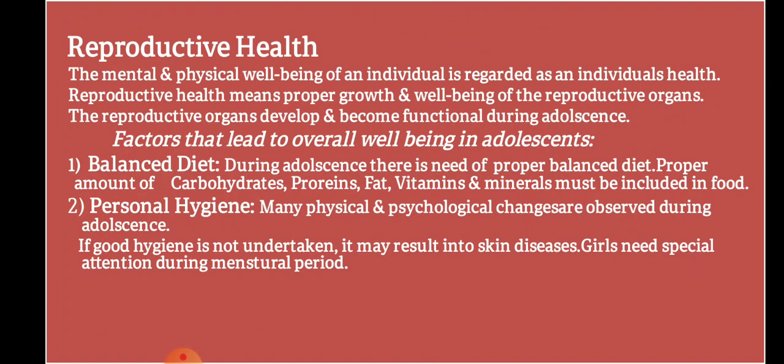Firstly, let us start with Reproductive Health. The mental and physical well-being of an individual is regarded as individual health. However, talking about reproductive health, it means proper growth and well-being of the reproductive organs. The reproductive organs develop and become functional during adolescence. There are certain factors that lead to overall well-being in adolescence, be it overall health or reproductive health.